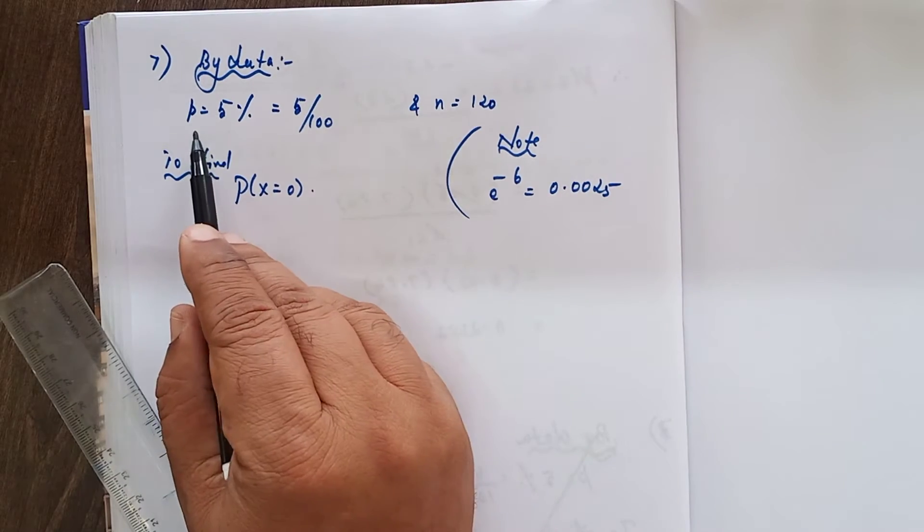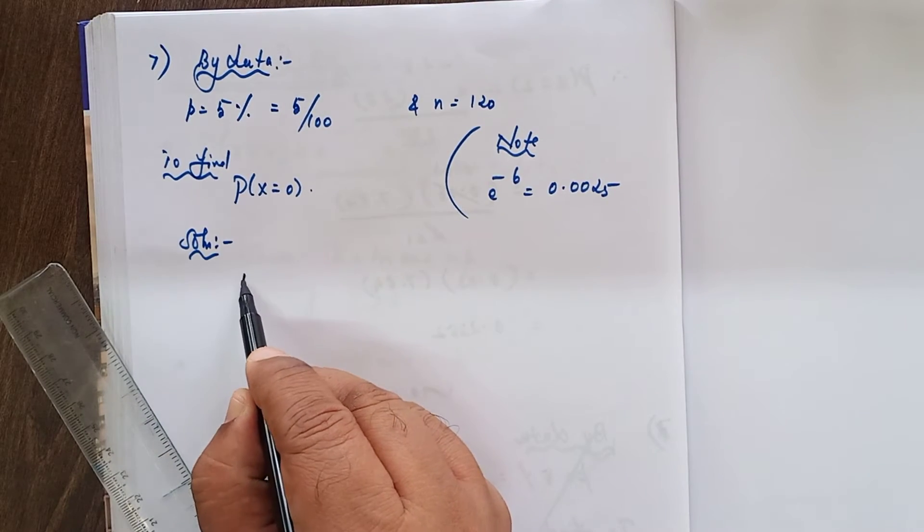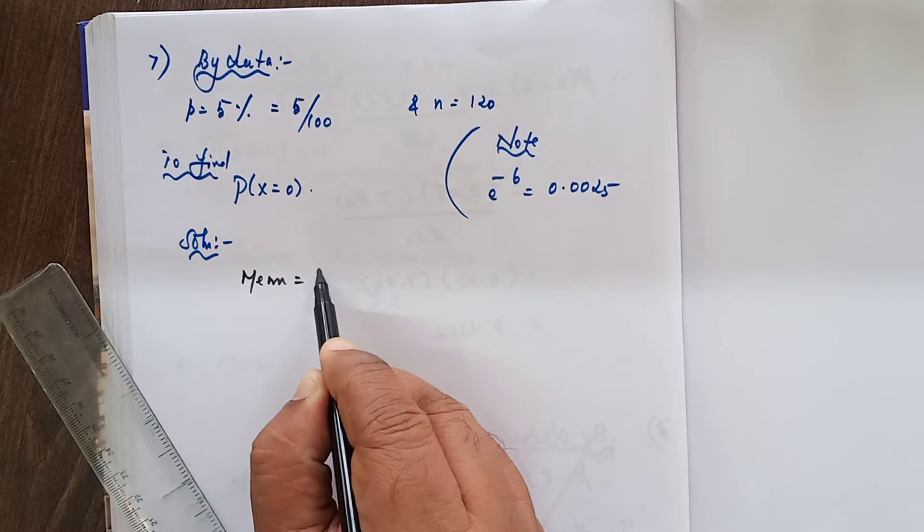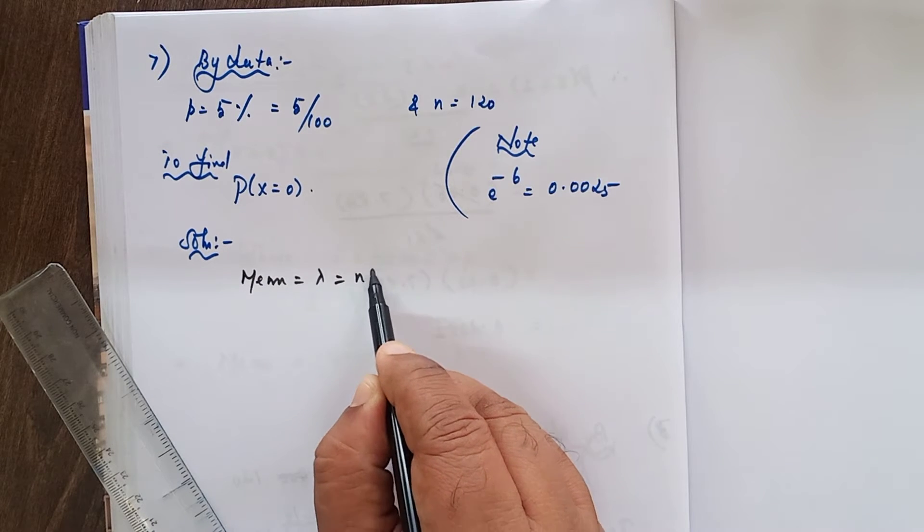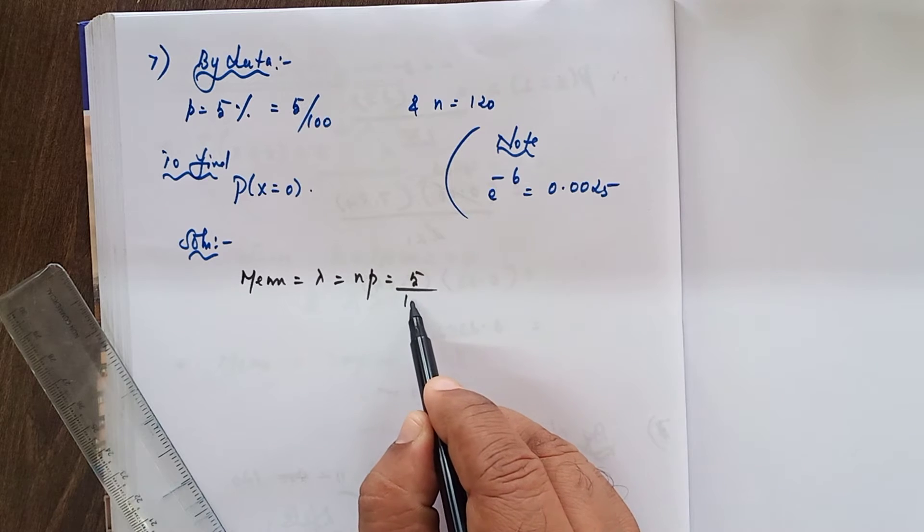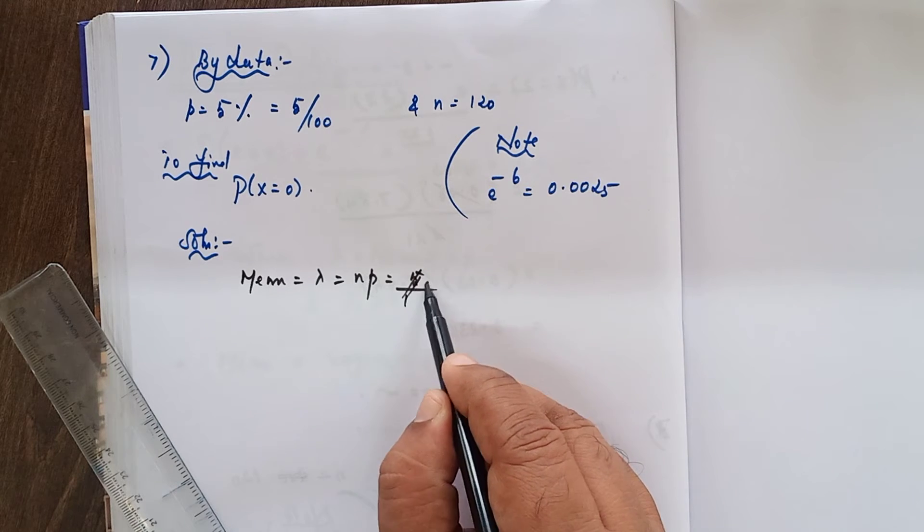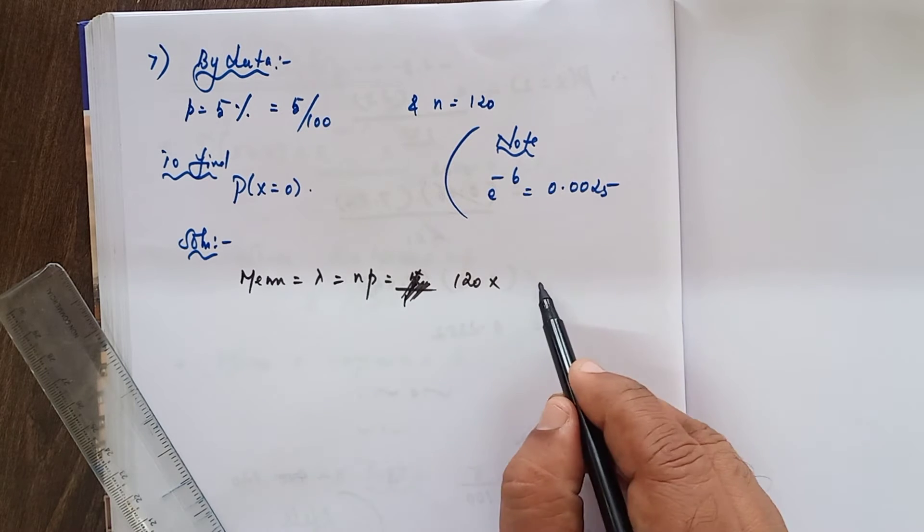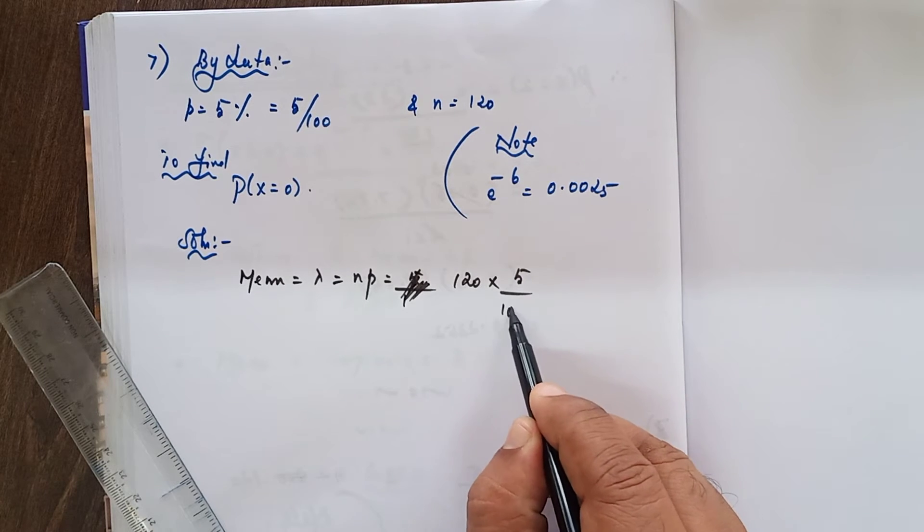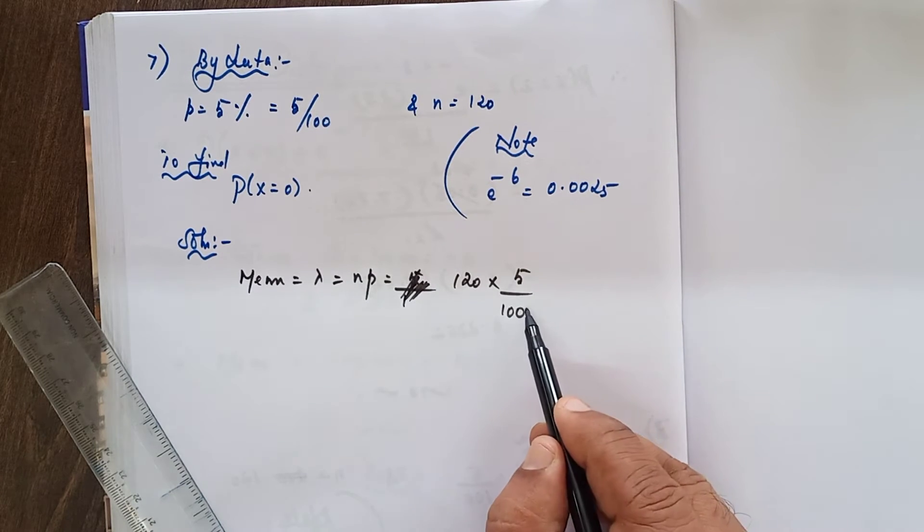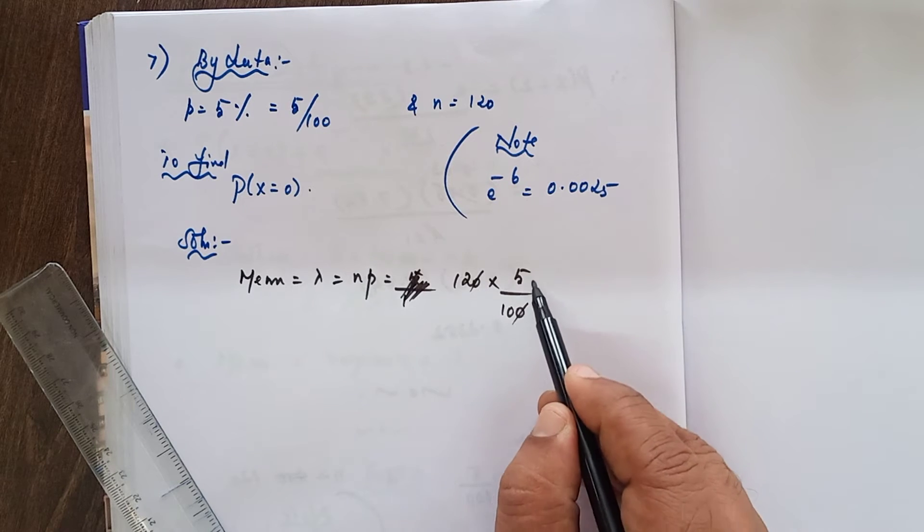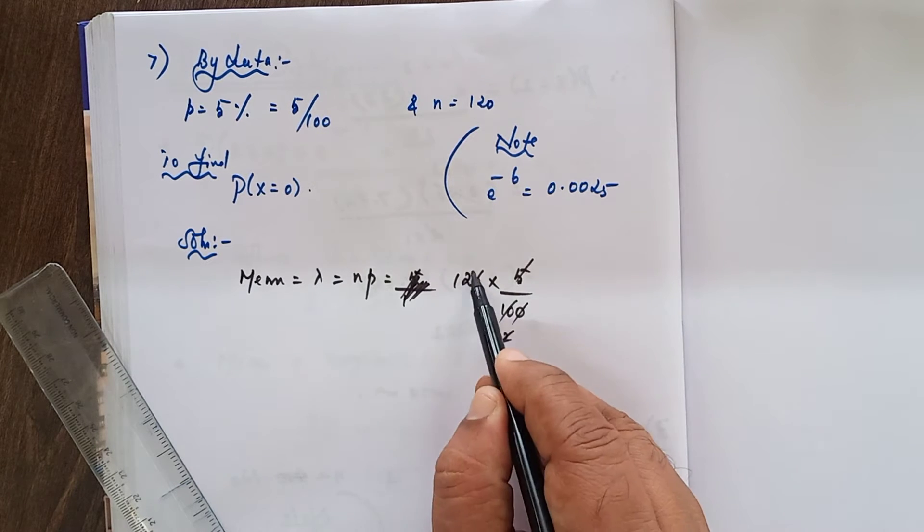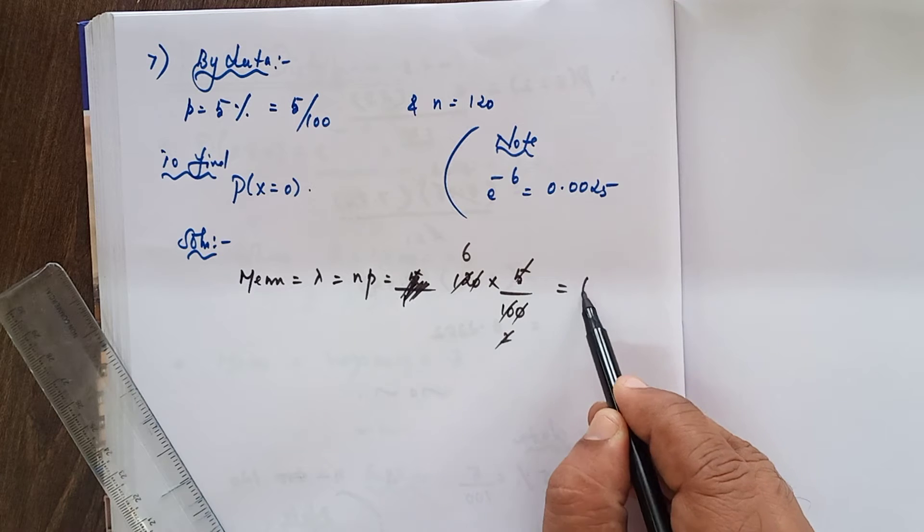Here small p and n value are given. I am going to find out the mean, that is equal to lambda, which equals n into P. So n equals 120 into P equals 5 divided by 100. Then the zeros get cancelled, that gives us 6. That is the value of lambda.